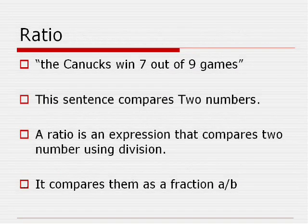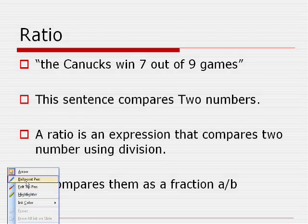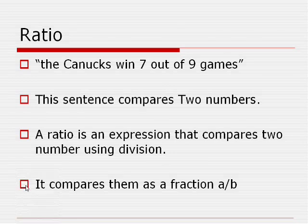To begin with the ratio, say we said the Canucks win seven out of nine games. Obviously that sentence is comparing two different numbers. Now those two numbers, when we compare them mathematically, we compare them using division. So it compares them as a fraction of a over b.